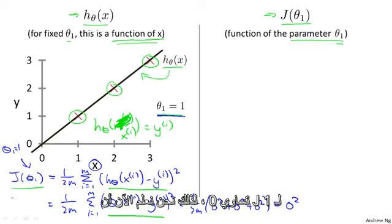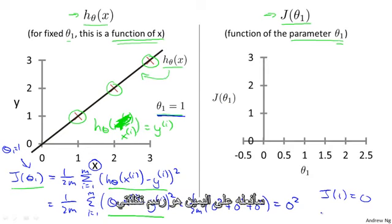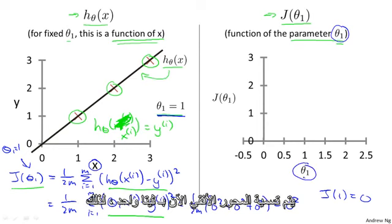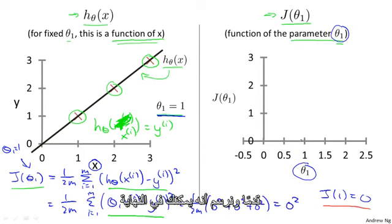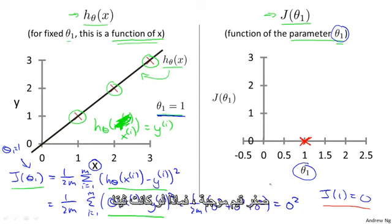So we now know that J(1) equals 0. Let's plot that. What I'm going to do on the right is plot my cost function J. Because the cost function is a function of my parameter theta one, when I plot my cost function, the horizontal axis is now labeled with theta one. So I have J(1) equals 0 — let's go ahead and plot that. You end up with a point over there. Now let's look at some other examples. Theta one can take on a range of different values — negative values, zero, or positive values.